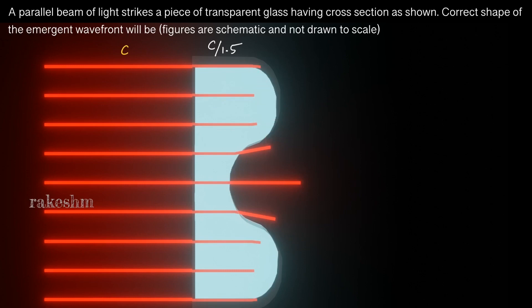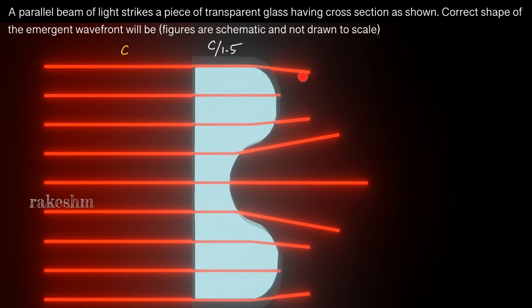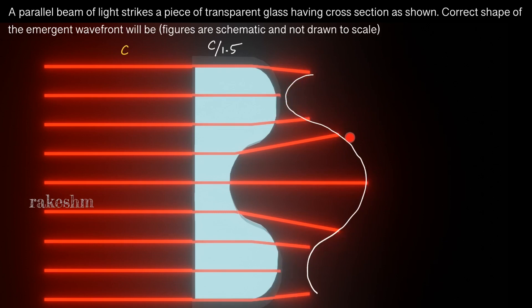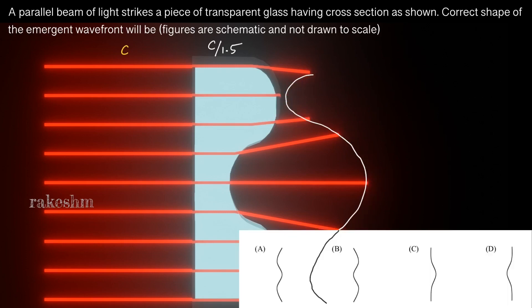The question asks for the correct shape of the emergent wavefront, meaning after the light has fully emerged from the glass. All these points here are in the same phase, so let us join all these points to get the emergent wavefront. This here is our emergent wavefront.